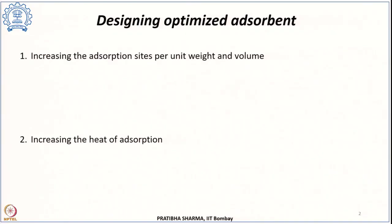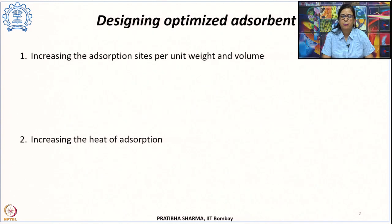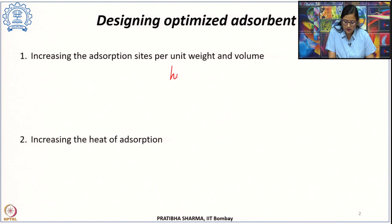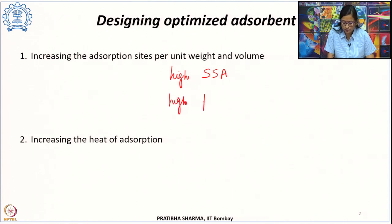Designing optimized adsorbent materials is a challenging task. There are two requirements that have to be taken care of. First, we have to increase the number of adsorption sites per unit weight and per unit volume of the adsorbent. This can be done by selecting materials which have high specific surface area and high pore volume, since hydrogen uptake depends upon pore dimensions and specific surface area.